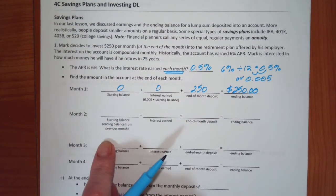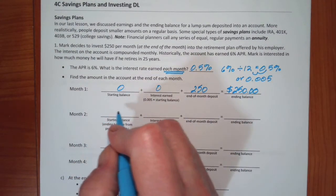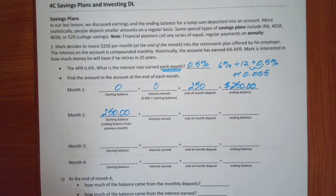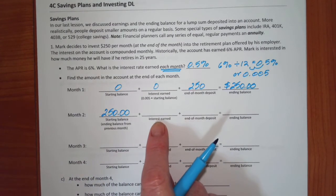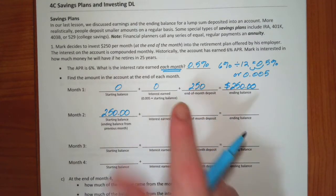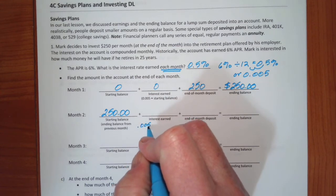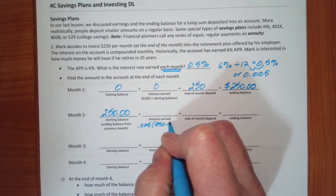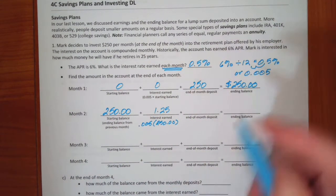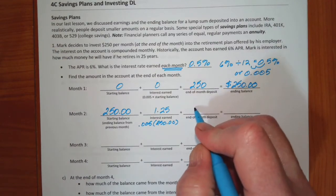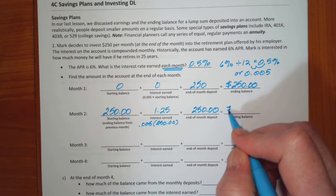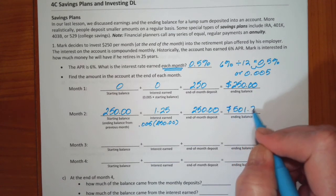Alright, so that's for month one, he's got his $250 in there. So, the ending balance in month one becomes the starting balance in month two. Now, we are going to earn interest on that. Well, it's 0.005 times the starting balance, so this is 0.005 times $250. And we end up with $1.25. He still then makes his end-of-month deposit, which is $250. So, at the end of this month, of month two, he ends up with $501.25.